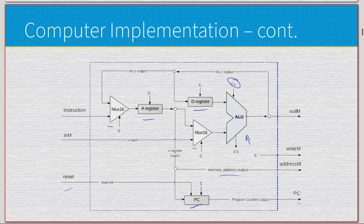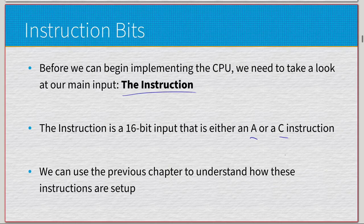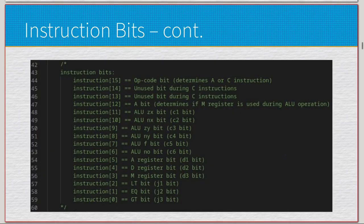This isn't all of it — there are actually quite a lot of components not represented in this graphic. Before we can begin implementing the CPU, we need to look at the input to it — our instructions. Each instruction will be a 16-bit input that is either an A instruction for assignment or a C instruction for computation, and we can look at the 16-bit binary strings to determine which one they are. For C instructions it's much more nuanced than A instructions.